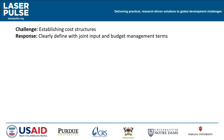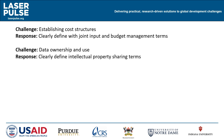Now that you've considered these, let's look at some potential challenges and their responses. If you need to establish parameters around cost structures, you can clearly define these with joint input and budget management terms. If you need to clarify data ownership and use, you can clearly define intellectual property sharing terms early on.